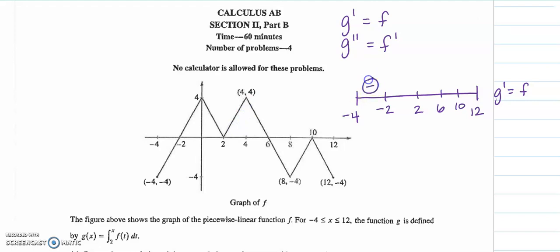From negative 4 to negative 2, f is negative therefore g prime is also negative. Then it goes up and it's still up, and then it's down below the x-axis and then negative.